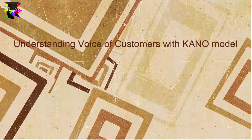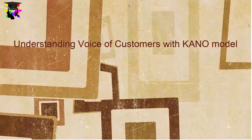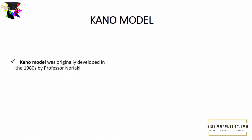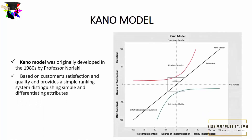Now let us look at a model that can describe different types of customers' needs and preferences — it is the Kano model. The Kano model was originally developed in the 1980s by Professor Noriaki. It is based on customer satisfaction and quality and provides a simple ranking system distinguishing simple and differentiating attributes. The differentiating attributes in the Kano model are the degree of customer satisfaction and the degree of implementation of the job to meet customer needs.